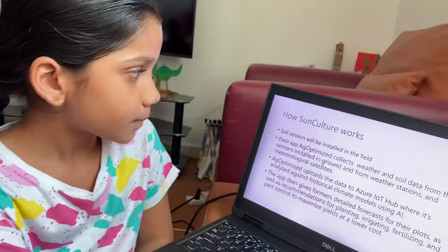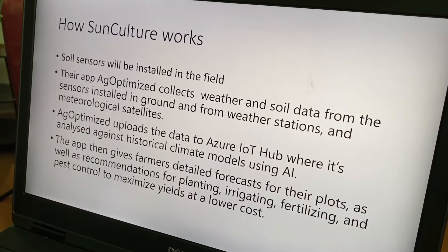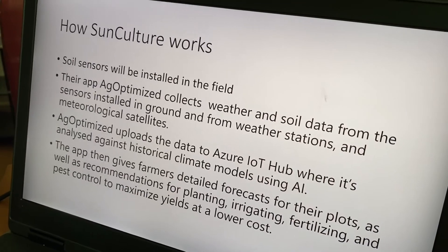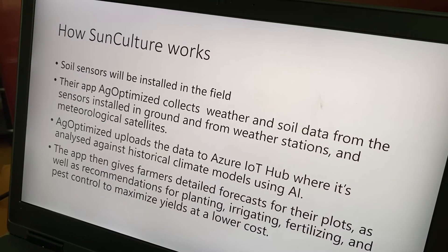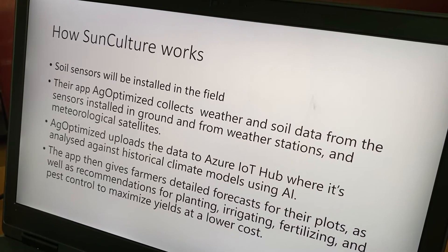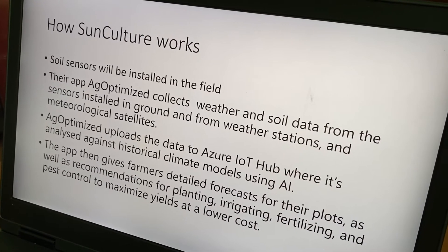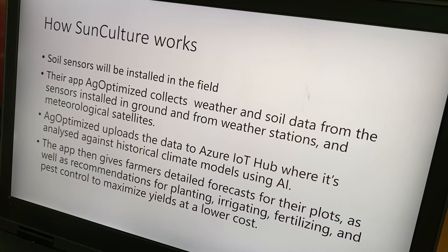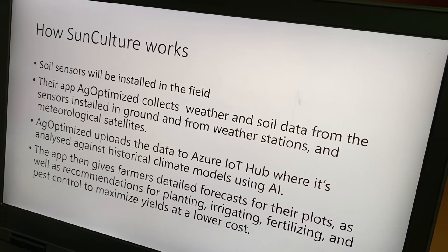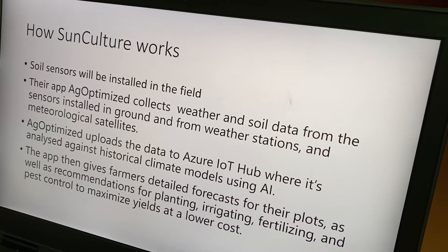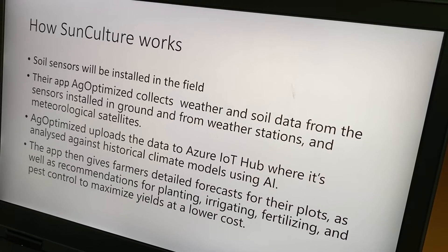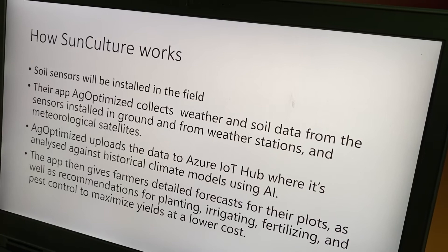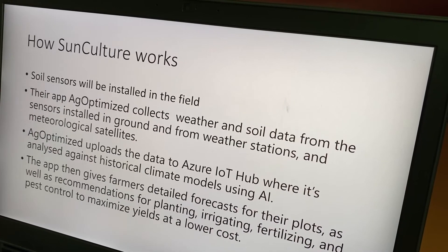Now, let's see how SunCulture can solve my problem. Soil sensors will be installed in the field. Their app, Ag-Optimized, collects weather and soil data from sensors installed in the ground and from weather stations and meteorological satellites. Ag-Optimized uploads the data to Azure IoT Hub, where it's analyzed against historical climate models using AI. The app then gives farmers detailed forecasts for their plots, as well as recommendations for planting, irrigating, fertilizing, and pest control to maximize yields at a lower cost.